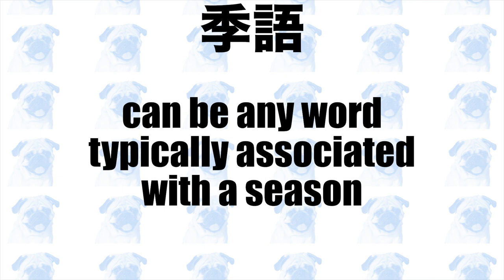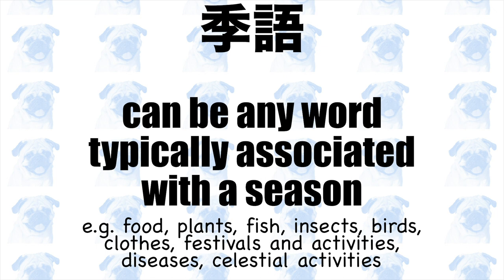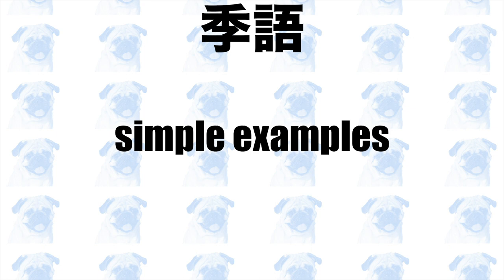The second crucial feature is that a haiku usually contains a kigo — a word that indicates or implies the season of the poem. Kigo can be anything typically associated with a particular season, including food items, plants, fish, insects, birds, clothes, seasonal festivities and activities, diseases that spread in a particular season, celestial activities, and so on. The majority of kigo are pretty straightforward.